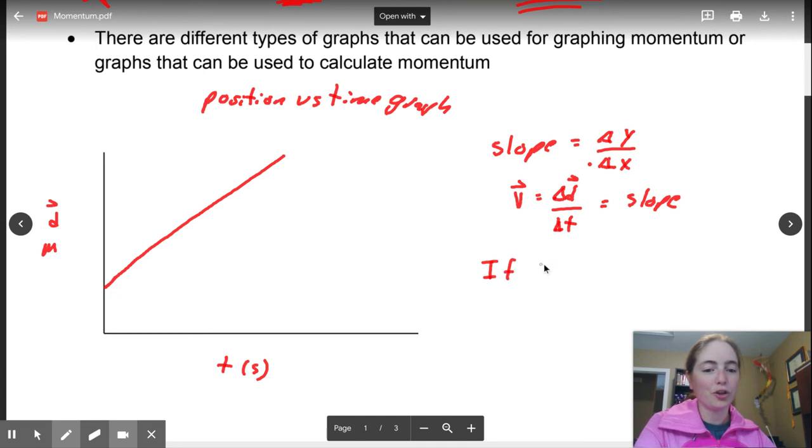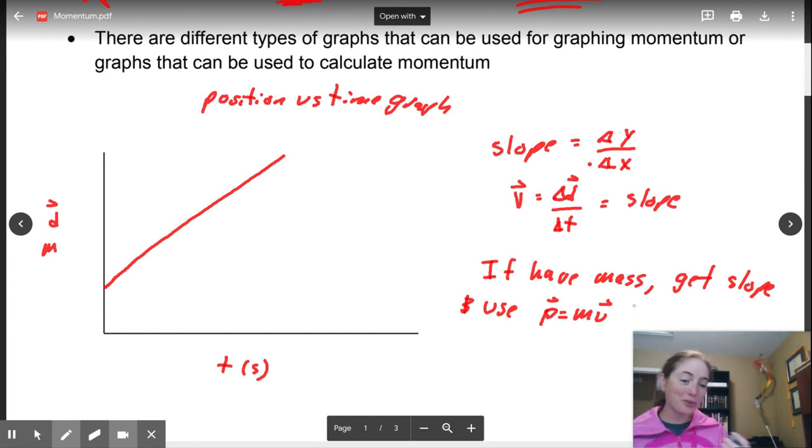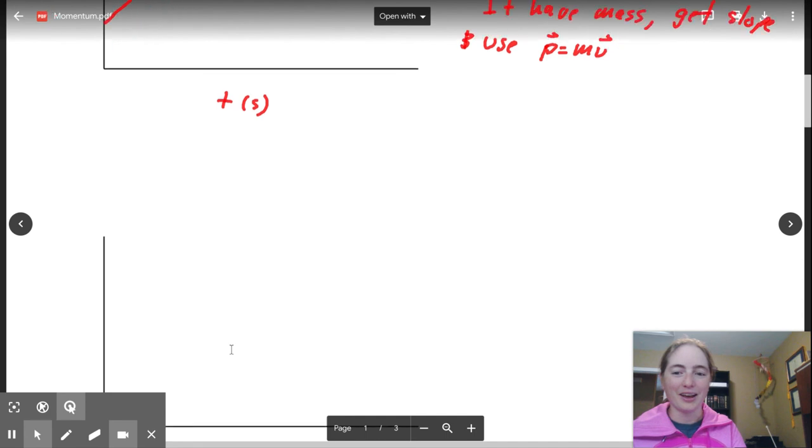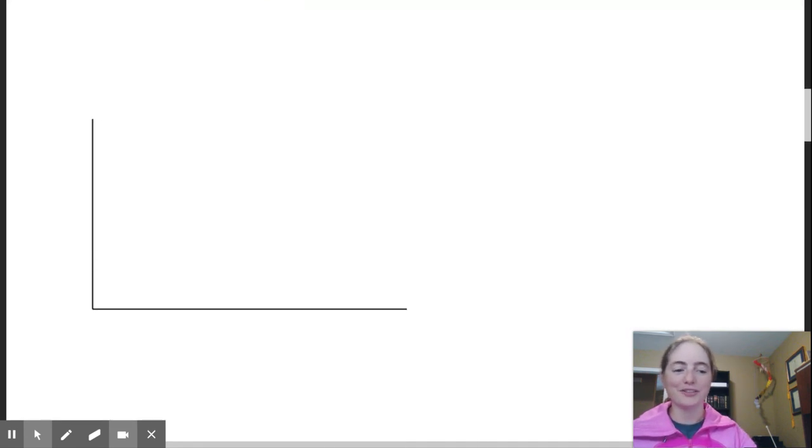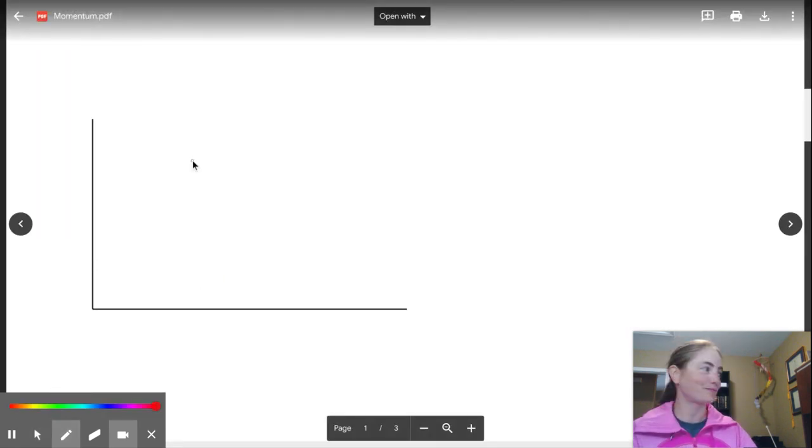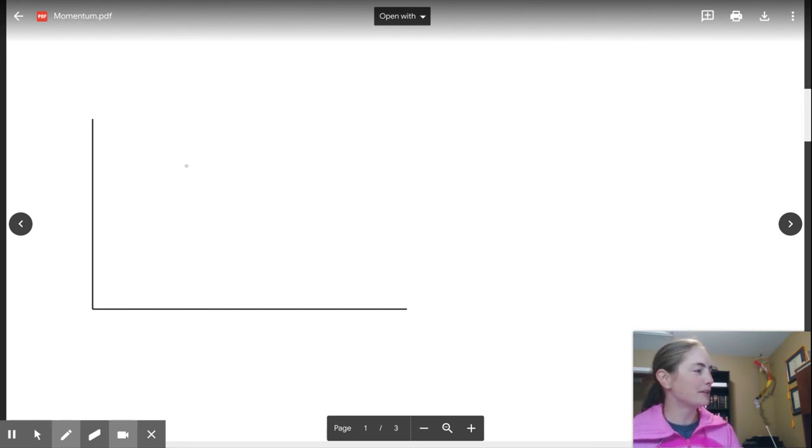Well, if you have mass, you can get the slope, and then you can use p equals mv if you need momentum that way. So that's one way to use graphs to assist with calculating momentum.